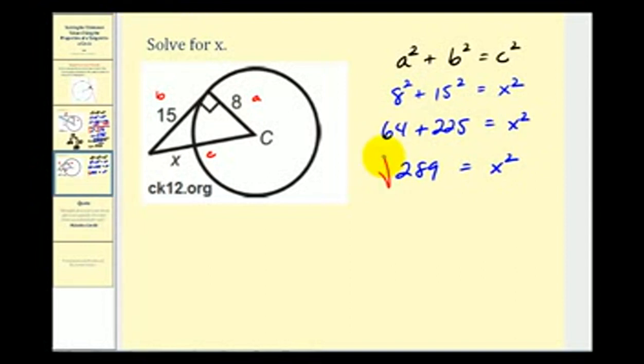And again, we're going to take the square root of both sides. And because it's a length on a triangle, we're only going to consider the principal or positive square root. So we have X equals the square root of 289.